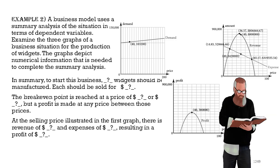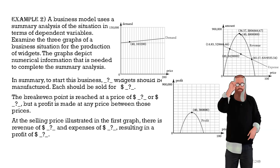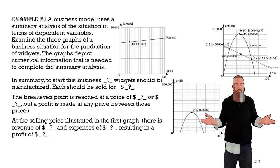A business model uses summary analysis of the situation in terms of the dependent variable. Example, examine the three graphs of a business situation for the production of widgets. The graphs depict numerical information that is needed to complete the summary analysis. Write the summary analysis in the terms of the data presented in the graphs.